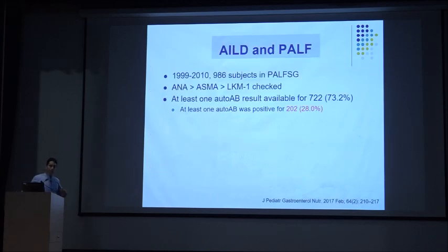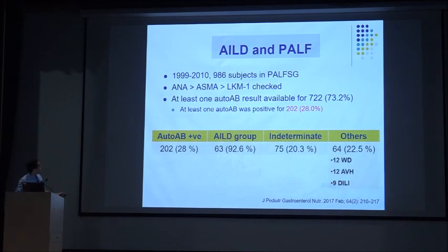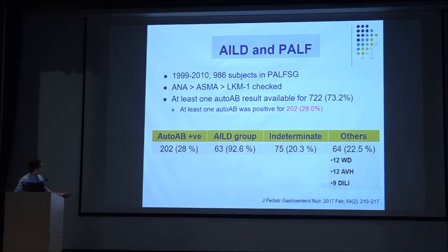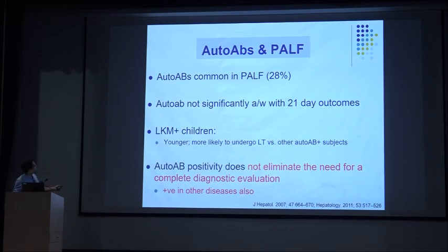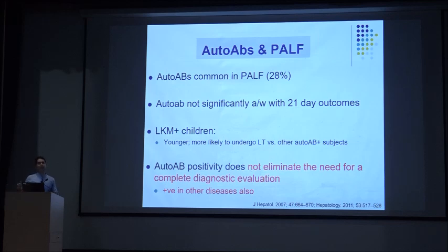The third important group is autoimmune hepatitis. A 2017 study retrospectively checked 986 patients and found that 28 percent had at least one autoantibody positive. Almost one fifth of indeterminate ALFs also came out positive for autoantibodies. However, autoantibodies are common and not definitively associated with 21-day outcomes. The conclusion is that autoantibodies are not specific but should prompt liver biopsy if you strongly suspect autoimmune hepatitis, and their presence does not eliminate the need for complete diagnostic evaluation.